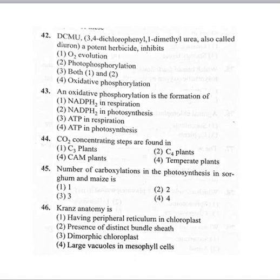Coming to the 43rd question: oxidative phosphorylation is the formation of — option 1 NADPH2 in respiration, option 2 NADPH2 in photosynthesis, option 3 ATP in respiration, option 4 ATP in photosynthesis. Phosphorylation is the process where a phosphate group is added to an organic compound — for example, inorganic phosphate added to ADP forms ATP. There are two types: oxidative phosphorylation and substrate-level phosphorylation.